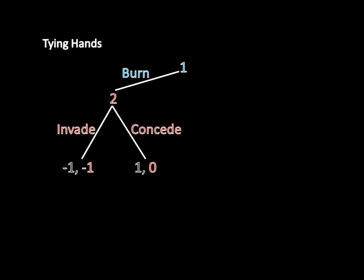Now we just switch over to the other side of the game tree. If Country 1 does burn the bridge, then Country 2, if it invades, has to fight a costly war, which is bad for it. It gets negative one to fight that battle over the island. Whereas it gets zero if it just concedes the island to Country 1. Since zero is greater than negative one, that means Country 2 will concede if Country 1 burned the bridge.